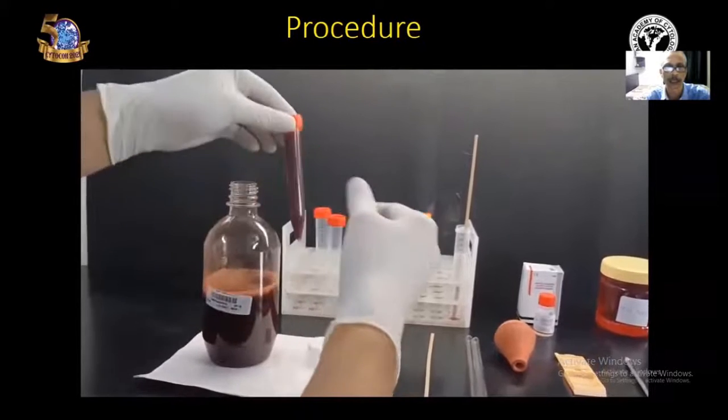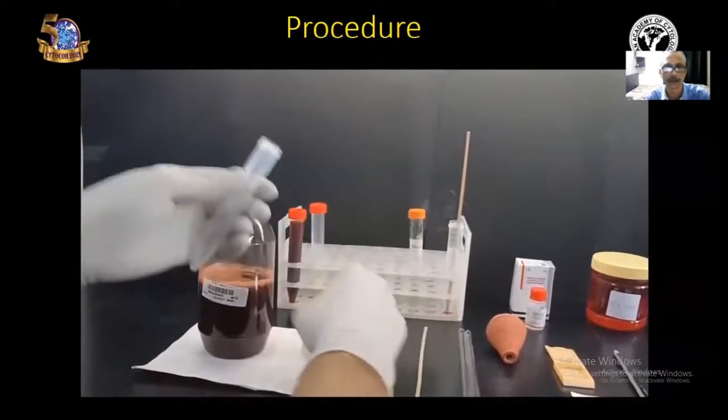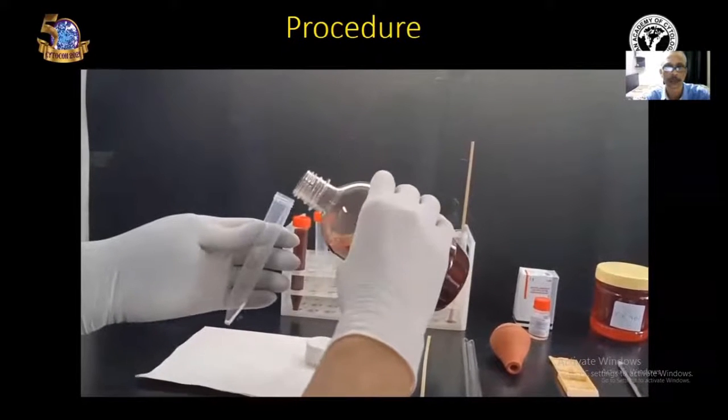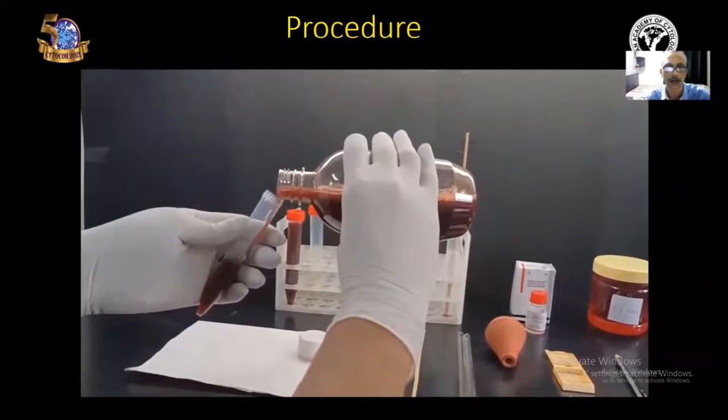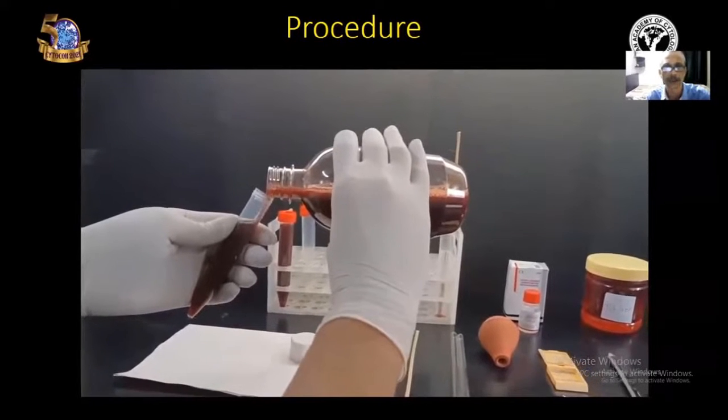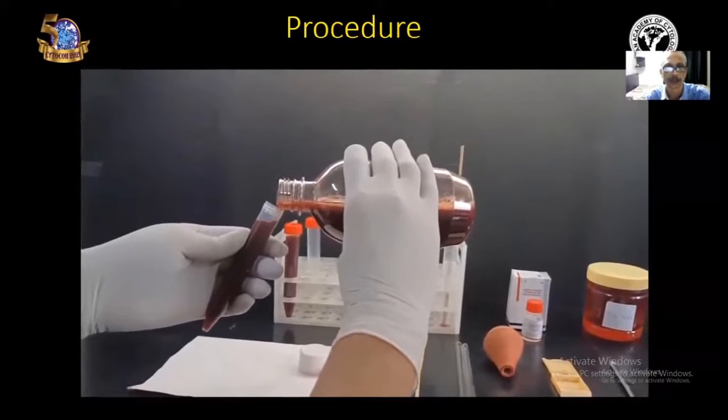Now take another centrifuge tube and fill it with fluid sample. Slowly we have to fill, and once it is filled, put the lid.